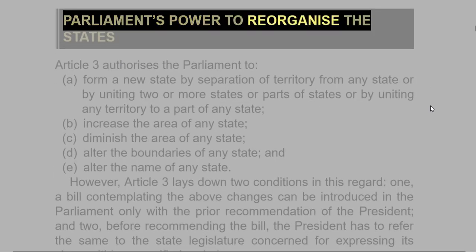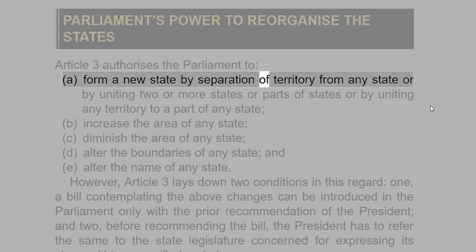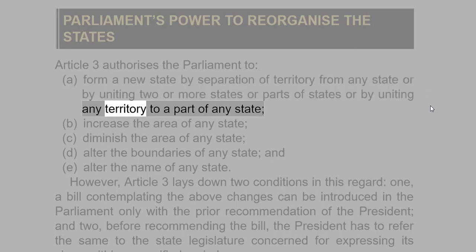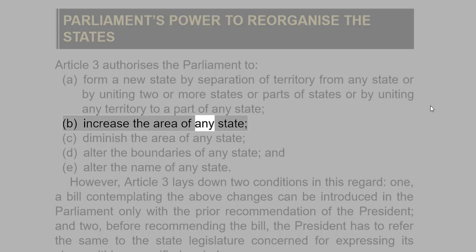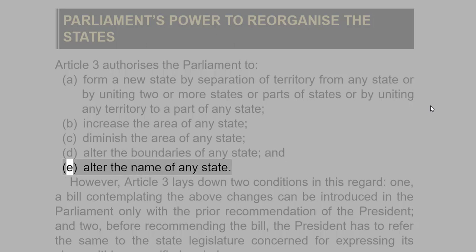Article 3 authorizes the Parliament to: (a) form a new state by separation of territory from any state or by uniting two or more states or parts of states or by uniting any territory to a part of any state; (b) increase the area of any state; (c) diminish the area of any state; (d) alter the boundaries of any state; and (e) alter the name of any state.